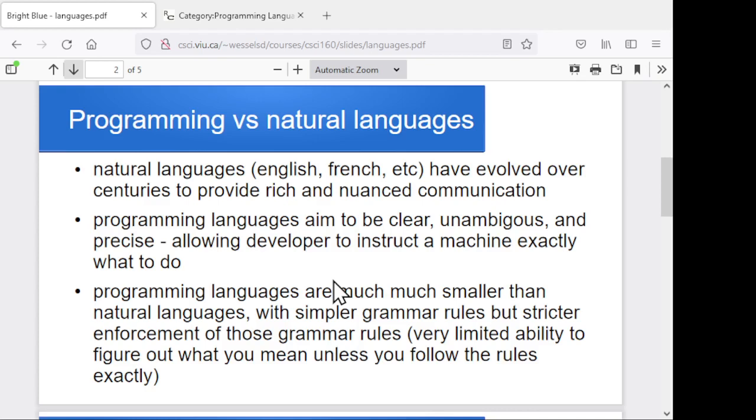If I say something to you, it's entirely possible you're going to take that in multiple possible different ways, depending on your experiences and my experiences and what our background is and what kind of mood we're in. So natural languages are very rich, very flexible, but have some ambiguity in them, have the ability to take things in different ways.